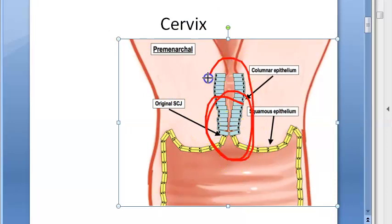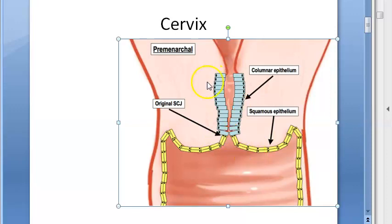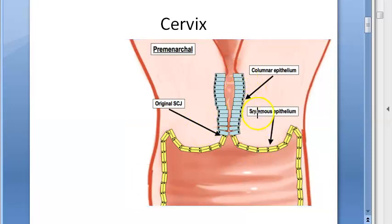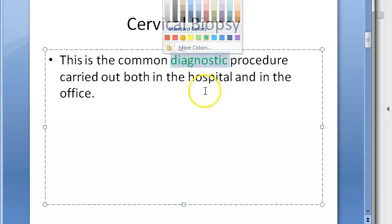We want a biopsy of the cervical tissue because cervical carcinoma is so common. Inside, the endocervix has columnar epithelium, and the ectocervix on the outside has squamous epithelium. In between these two is the transformation zone - the junction between squamous and columnar epithelium. This is the most common place for abnormal cells to develop, making cervical biopsy a very common diagnostic procedure.